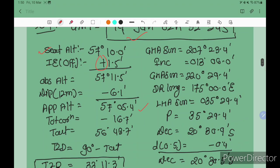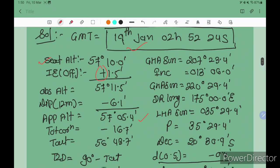Now we calculate GHA: GHA Sun was 207 degrees 23.4 minutes. Using the almanac, find the increment 013 degrees 06.0 minutes. Add these to get 220 degrees 29.4 minutes.